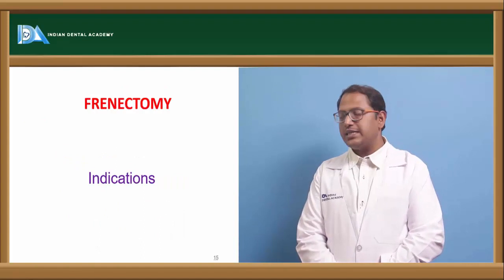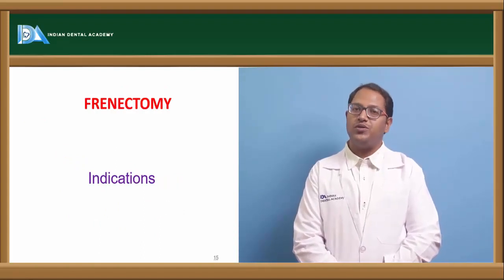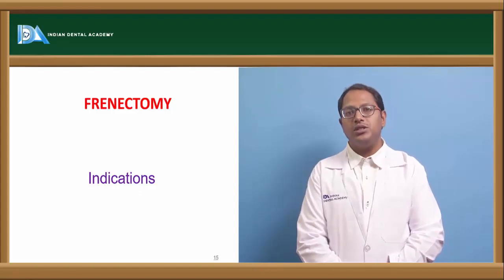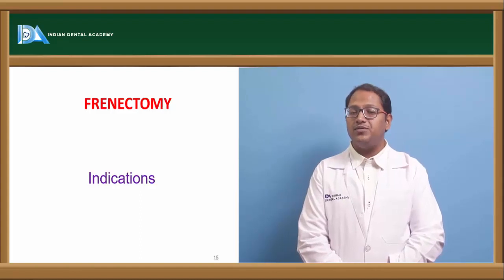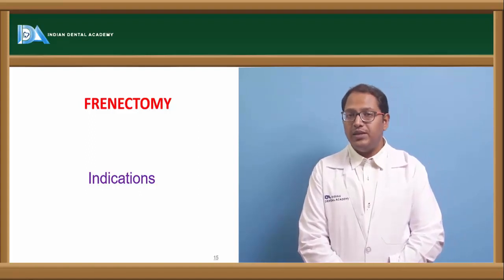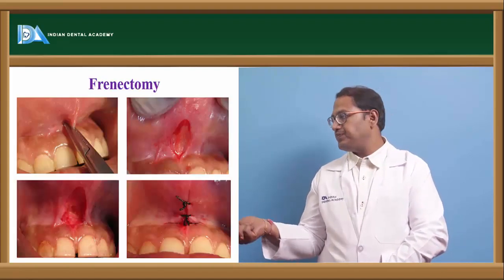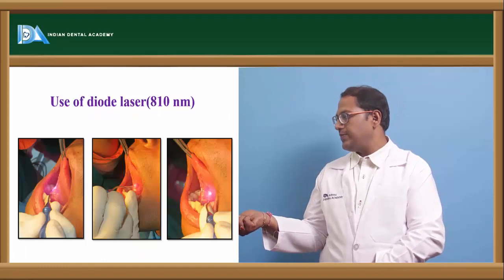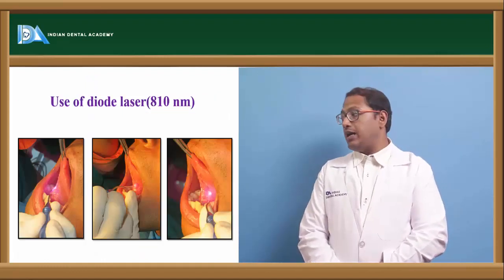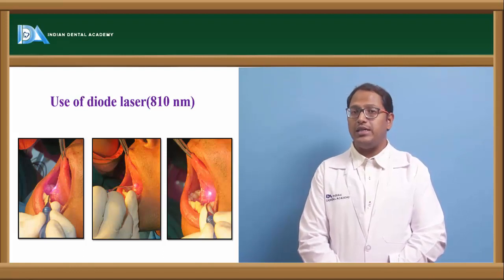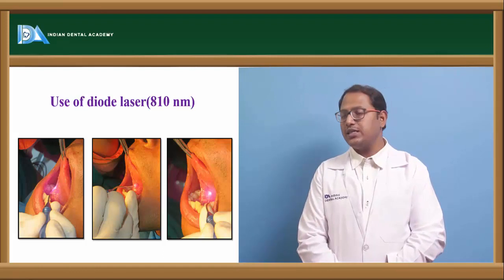Coming to frenectomy — indicated when the frenum is encroaching on the ridge. In cases of lingual frenum, also known as tongue-tie, we need to reduce the frenum. If the frenum is attached to the tip of the tongue, when the patient moves the tongue out, the denture will lose its stability. There are different techniques — diamond technique and window technique of removal, detailed in oral surgery classes. Most advanced is the use of 810 nanometer diode lasers for removal and recontouring of the frenum, which results in less bleeding, no pain sensations, and faster post-operative healing.